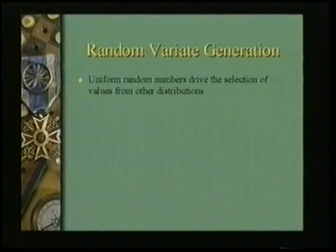What do you do with a random number? In some cases you want a number distributed uniformly between 0 and 1. In other cases you want random variates — numbers drawn from statistical distributions like normal, Weibull, gamma, and others. There are three ways of doing that: the inverse transform method, the acceptance rejection method, and the composition method.